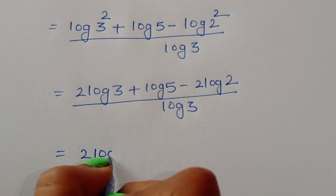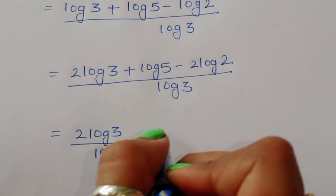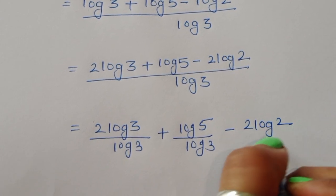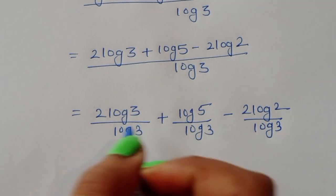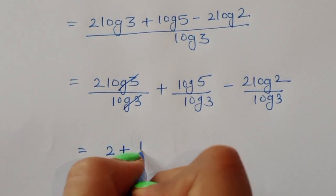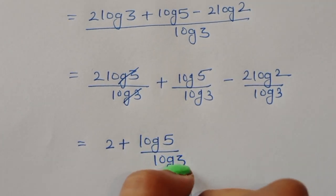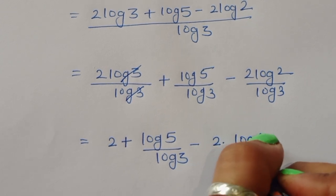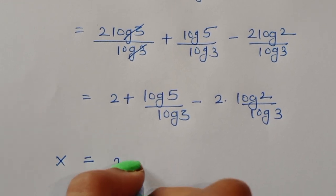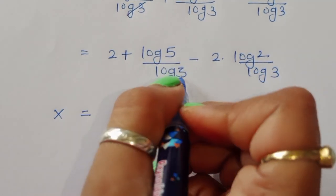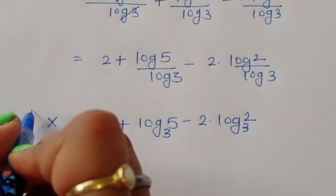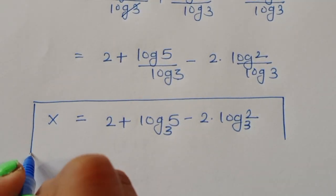Since 9 equals 3², log(9) equals 2·log(3). So the expression becomes: 2·log(3) plus log(5) minus 2·log(2), all divided by log(3). The log(3) from 2·log(3) cancels with the denominator, giving x equals 2 plus log₃(5) minus 2·log₃(2).